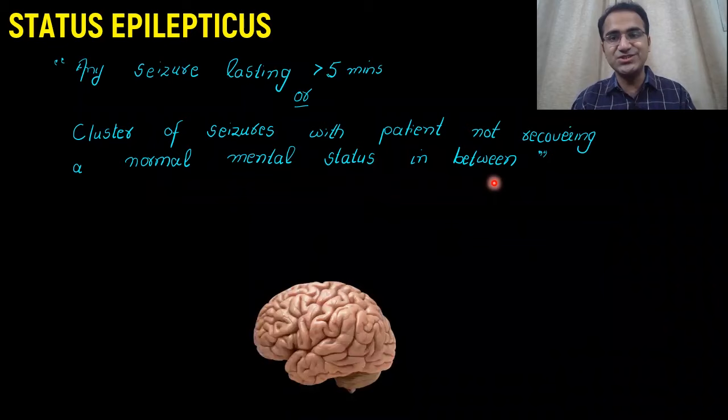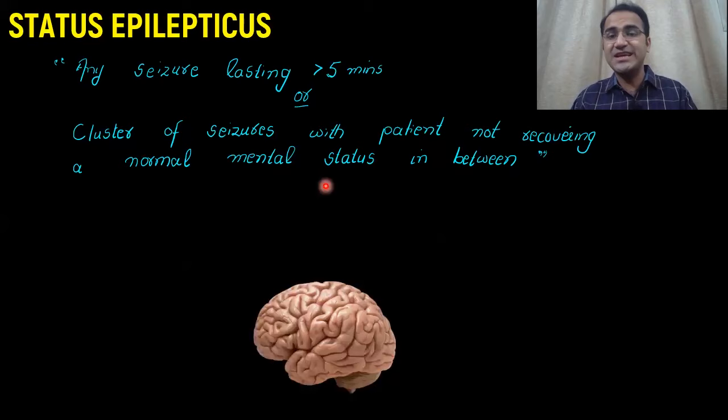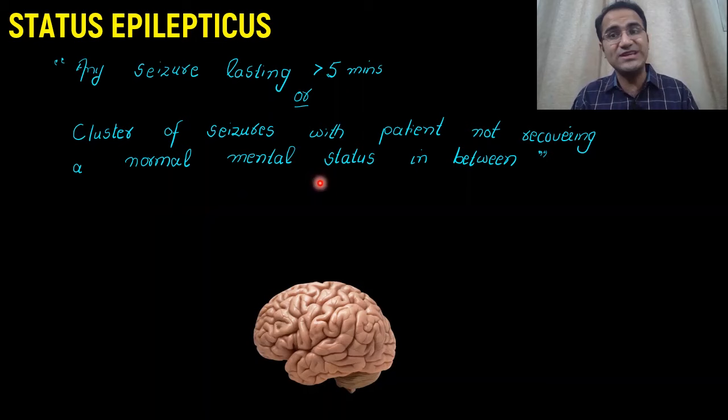Any seizure that lasts more than five minutes is called status epilepticus, or the patient is having a cluster of seizures — one seizure after another — with the patient not recovering a normal mental status in between. That is called status epilepticus.